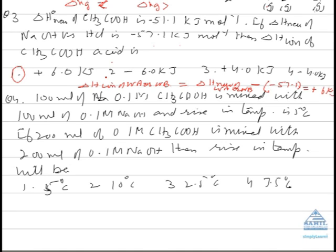Just look at the question: 100 mL of 0.1 M acetic acid is mixed with 100 mL of 0.1 M NaOH, and rise in temperature is 5 degrees. If 200 mL of 0.1 M acetic acid is mixed with 200 mL of 0.1 M NaOH, then the rise in temperature will be—dear students, the quantity of heat liberated will be doubled.